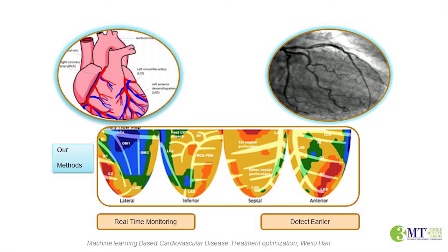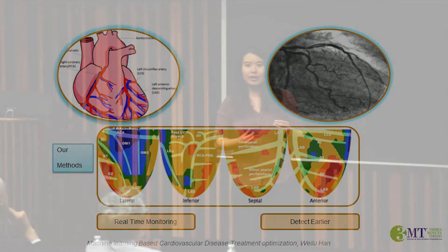Then we put these features into advanced machine learning models, such as logistic regression and neural networks. Then we predict meaningful metrics that generate actionable insights for the physician. So our vision is to produce a picture that looks like a Google Maps for your human heart — generating a metric that can segment these pictures based on the severity of your coronary artery disease.